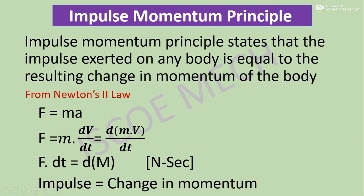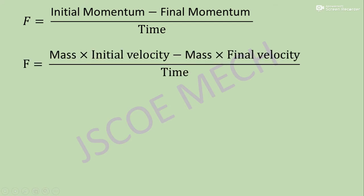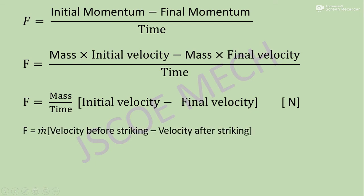Impulse is the change in momentum, and force is momentum divided by change in time, meaning the rate of change of momentum. By this definition we write the formula: F equals initial momentum minus final momentum divided by time, that is m·v₁ minus m·v₂ divided by time. Taking mass per unit time outside the bracket, mass divided by time is mass flow rate.